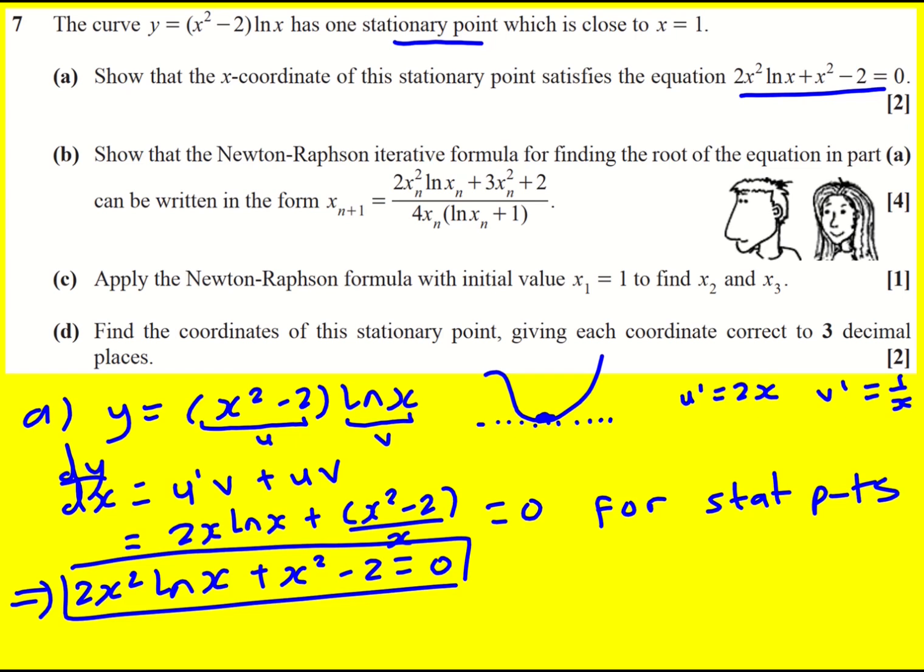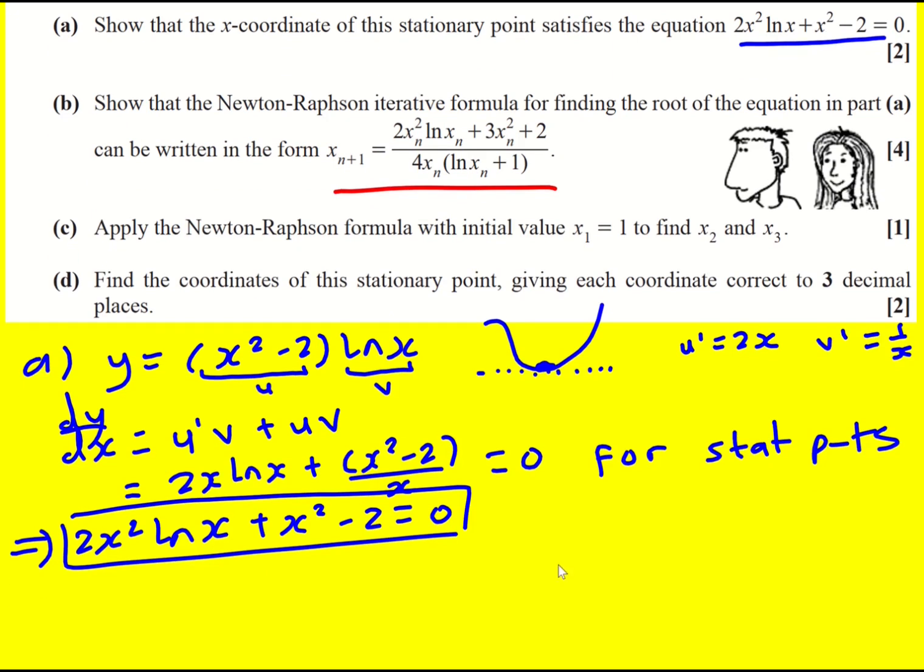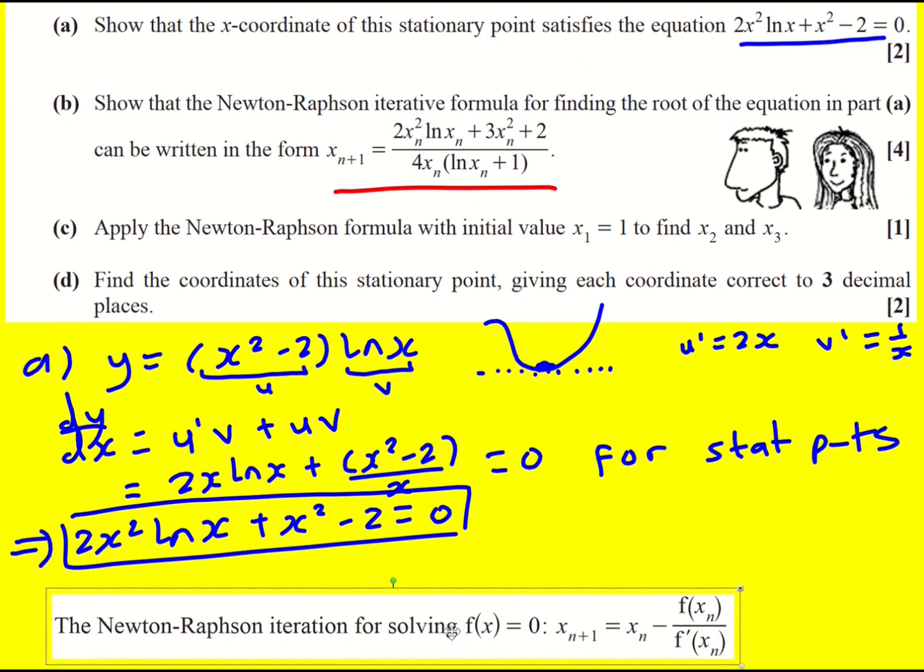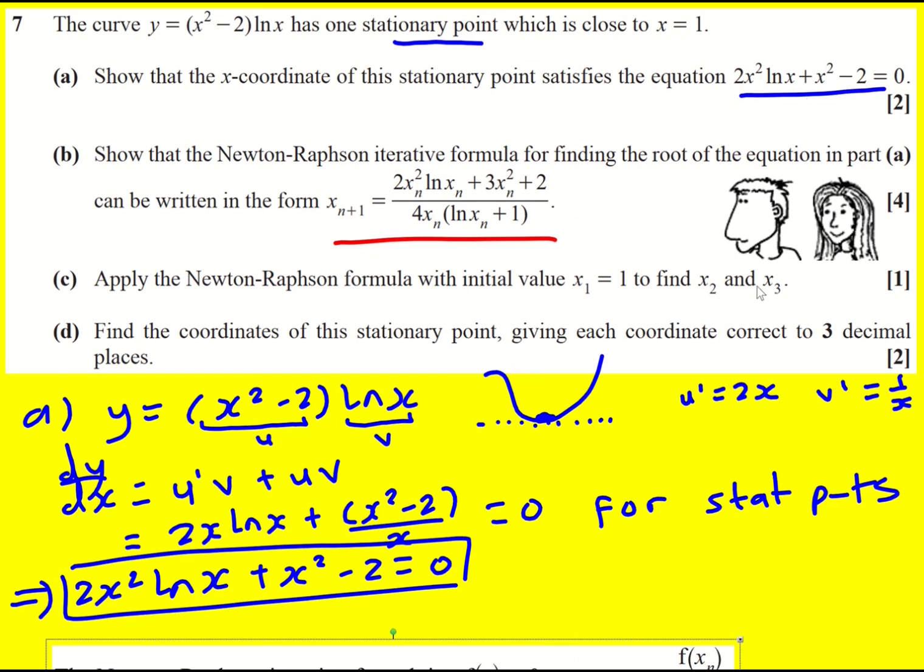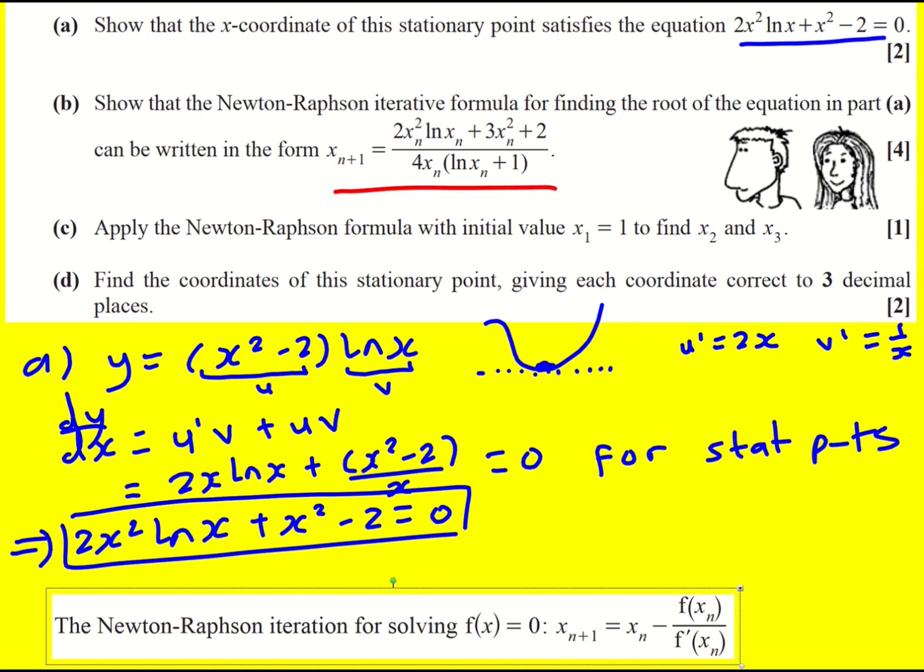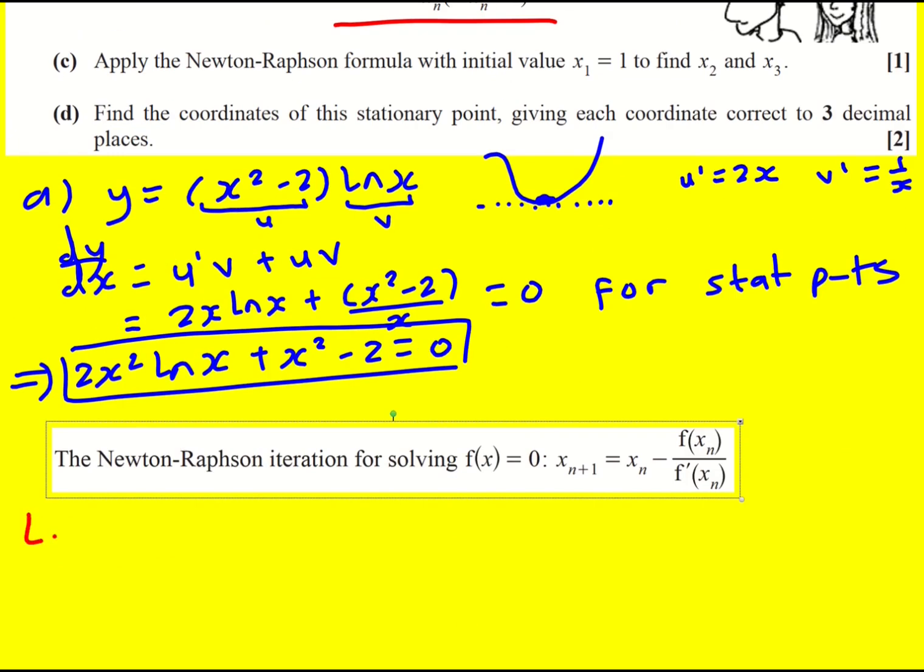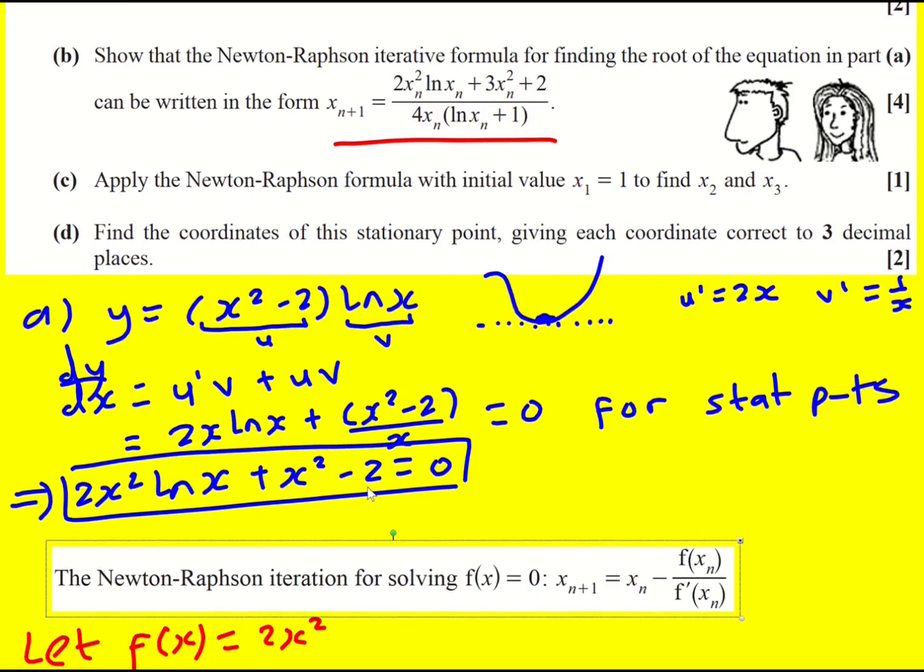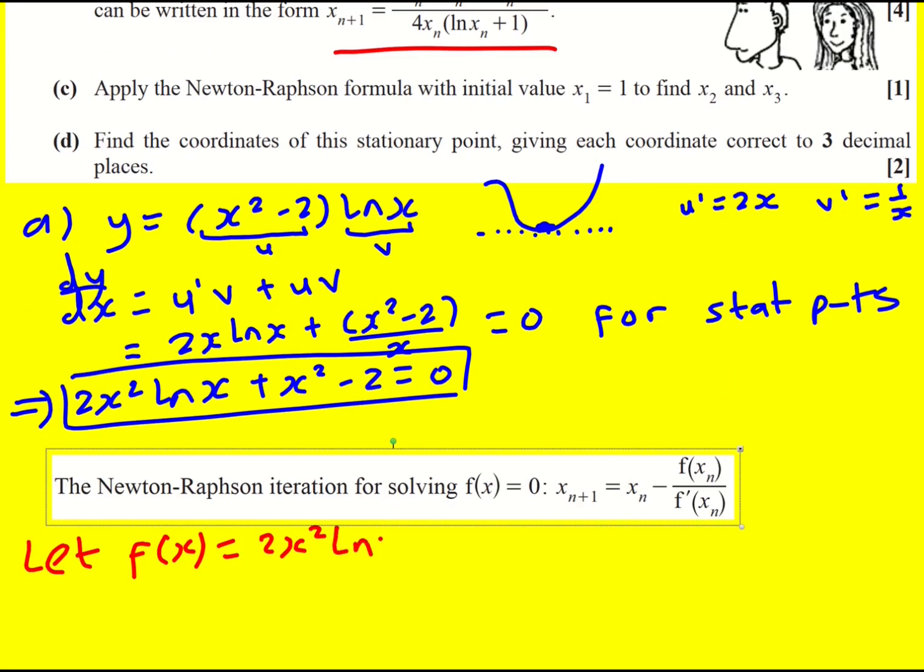Next we're asked to show that the Newton-Raphson iterative formula for finding the root of this equation can be written in the given form. We've differentiated to get an equation, but you've almost got to ignore that now. We're just focusing on solving an equation which we can't solve exactly. We need to use a numerical method. So the function f of x is actually this thing here: f of x is going to be 2x squared ln x plus x squared minus 2.